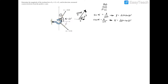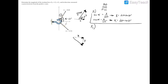That covers F1's y and x components. Now for F2: it's 375 newtons directed to the right and downward. Drawing the triangle, we have an arrow pointing right for x and one pointing downward for y. The given angle is 45 degrees.